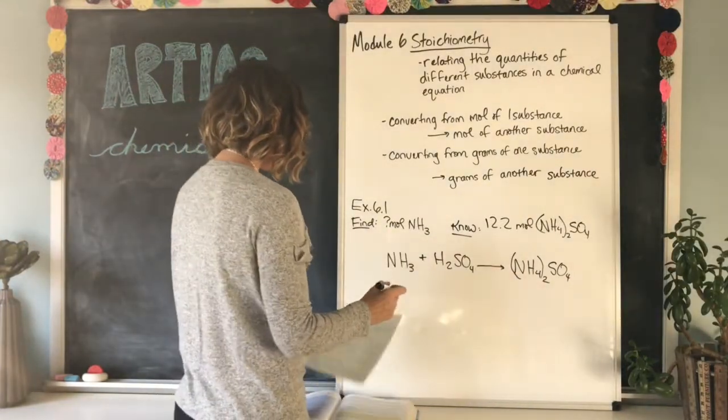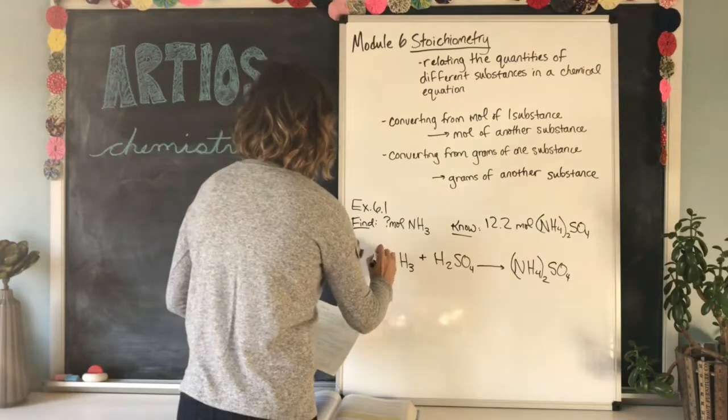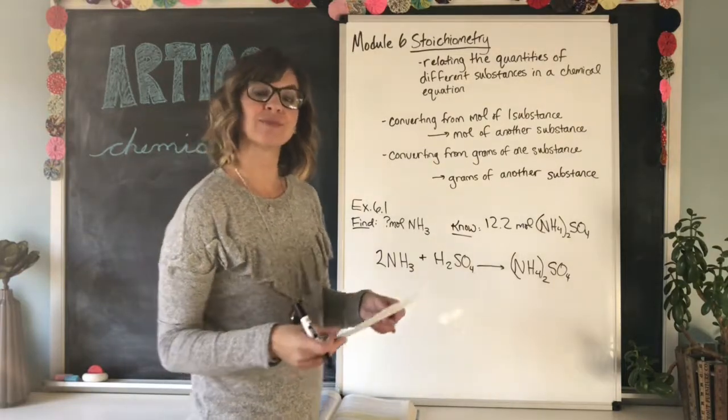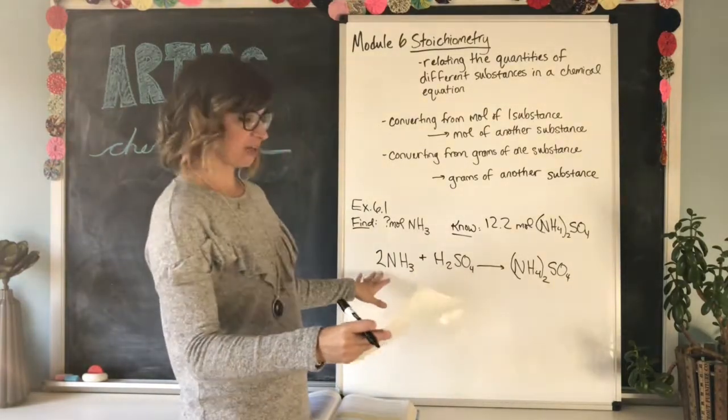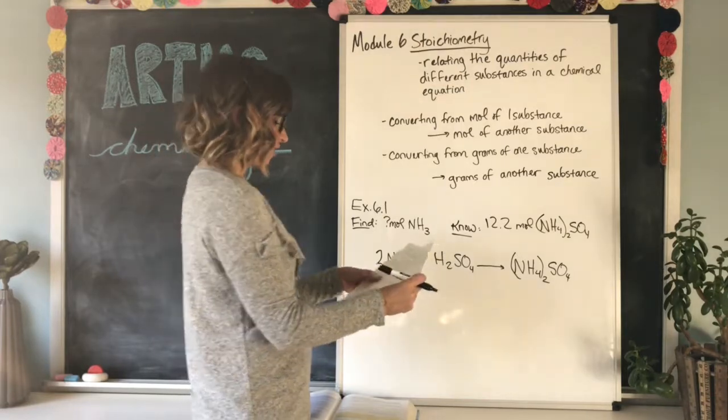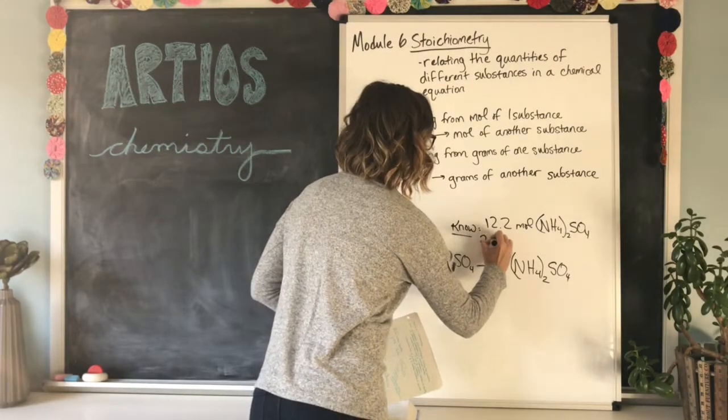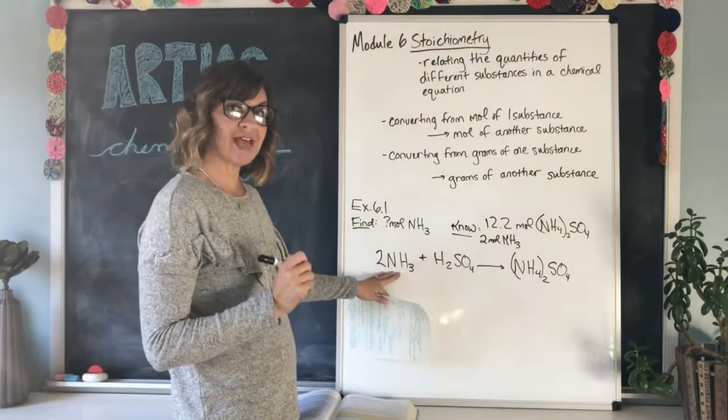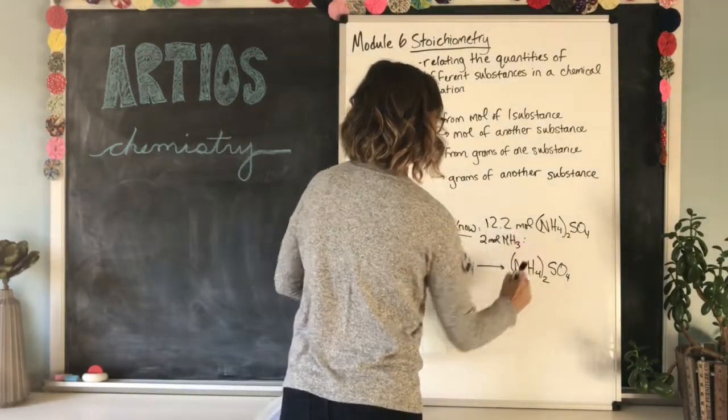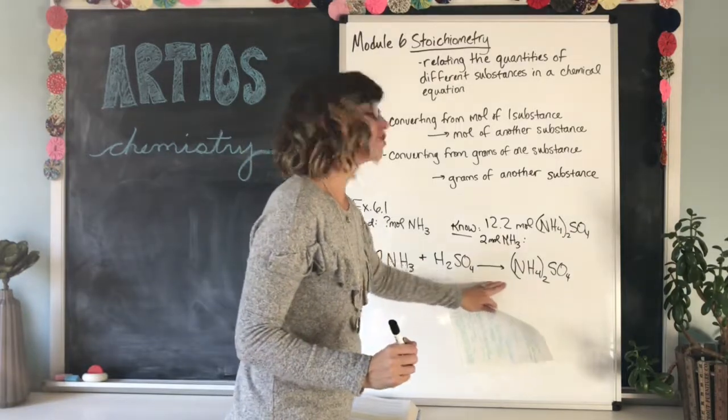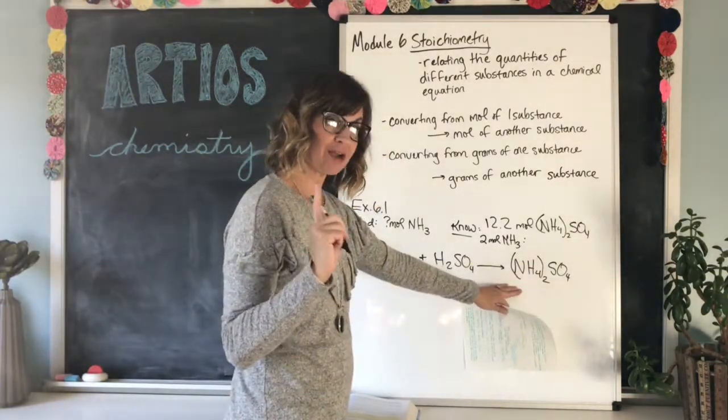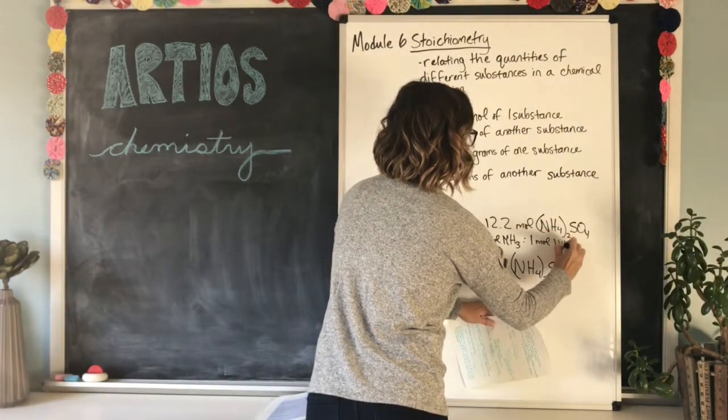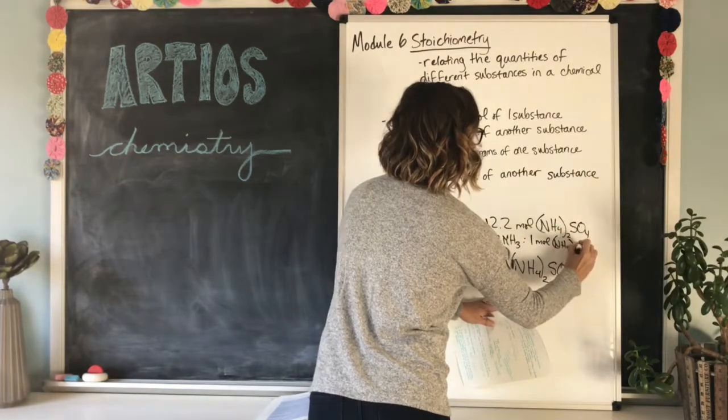So after we balance this equation, there's going to be a two out front here. I'm not going to go through balancing this one because you guys have had quite a bit of practice with balancing equations. So I figured it out on my own. There's a two here. And so the ratio would be two moles of NH3. For every two moles of NH3, we can produce how many moles of the fertilizer? There's no coefficient out front here. So that means one mole can be produced. One mole of NH4, two SO4.